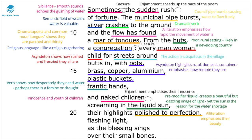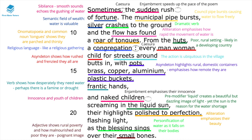In line 20, the children are described as 'polished to perfection,' and the alliteration here emphasises their beauty, innocence and appearance. The water is described as a blessing that 'sings,' and the personification of water as it falls on the body shows just how revered it is and how beautiful it feels on their parched skin. However, the children have 'small bones,' and this adjective is very poignant because it shows just how malnourished and poor these children are.